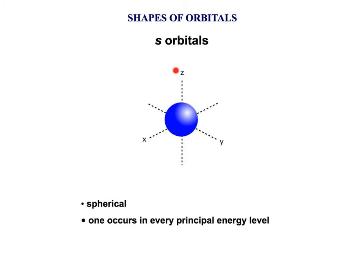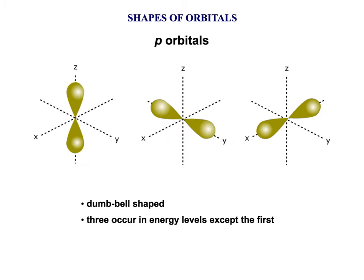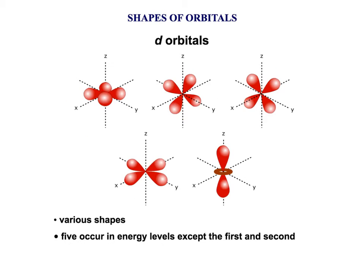The S subshell is a spherical shape. The P subshell has 3 orbitals — remember each orbital contains 2 electrons — and is a dumbbell shape. Some of the D orbital shapes get even more bizarre. For AQA chemistry, you're not actually required to know these shapes, but it is of interest.